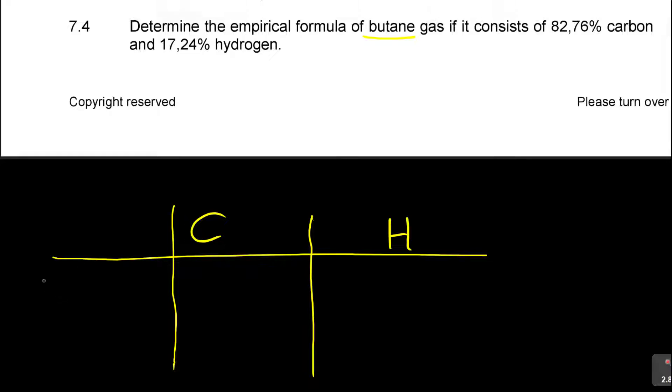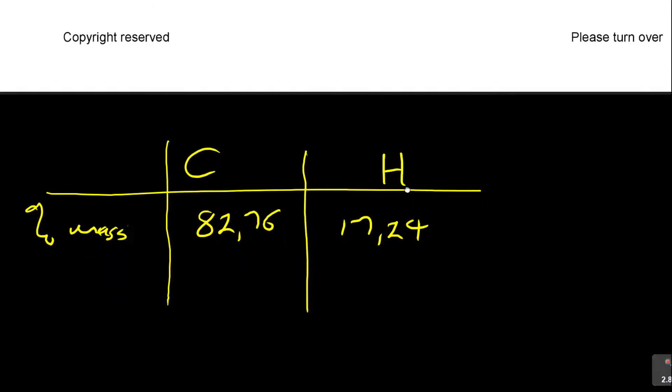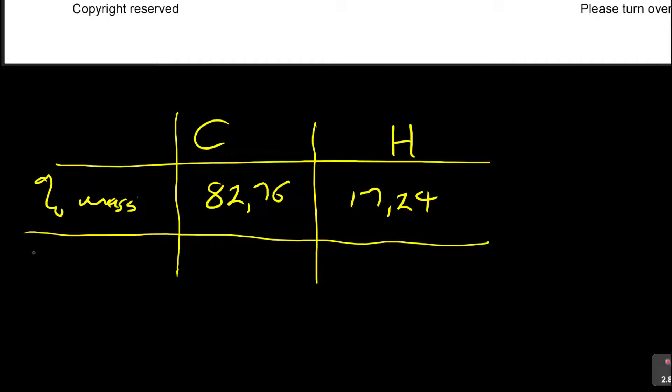We are talking about empirical formula. And then the first thing that you need to do with that, you say you are given the percentage in mass, which is 82.76 and then 17.24. And then after the percentage in mass, then you say in 100 grams, what would be that percentage in 100 grams? So it's same thing because percentage is out of 100. You just say 82.76 grams, 17.24 grams.